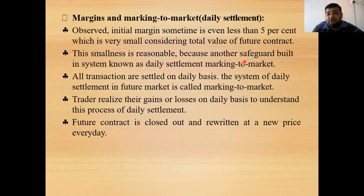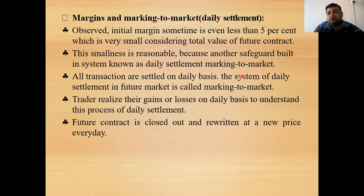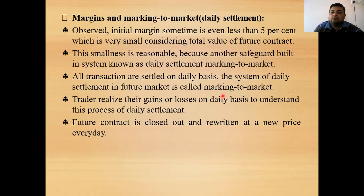Because losses are already adjusted and settled on a daily basis, on the expiry of the contract the person does not have to bear a large loss all at once, making it easier for the trader to settle the account. All transactions are settled daily — this system of daily settlement in the futures market is called marking to market. It means the margin account is maintained with either additions or deductions daily according to price movements in the futures contract. Traders realize gains or losses on a daily basis.